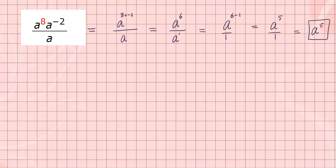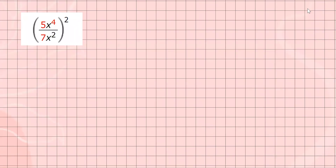Let's try another one. We're going to do the same thing and simplify using laws of exponents. I'm going to simplify the inner piece first — since they have the same base, I can subtract the exponents. So we have big parentheses to the second power. 5 and 7 don't simplify, so we rewrite them. For x to the 4 and x to the 2 on the bottom, subtracting exponents: 4 minus 2 gives me x to the second power.